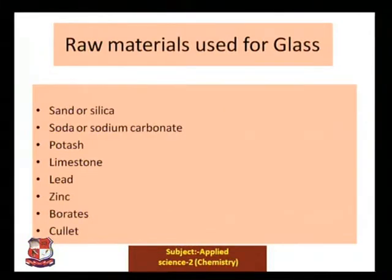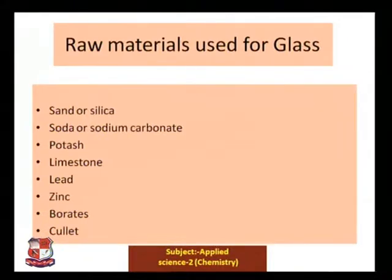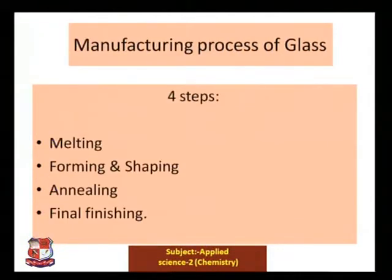The raw materials used for glass formation include sand or silica, soda or sodium carbonate, potash, limestone, lead, zinc, borates, and cullets. Cullets are small glass pieces that are also added during the glass formation process.